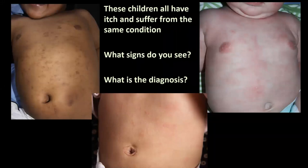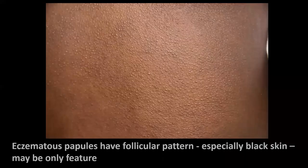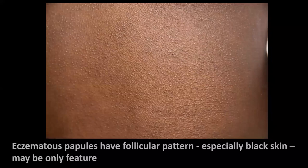I'm going to show a few other slides where atopic eczema can show up but maybe not with those typical findings. This is where the eczema is more around the follicles and more like little bumps — what we call papules. But this can still be very itchy, so do watch out for that, especially in darker skin types.